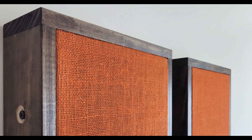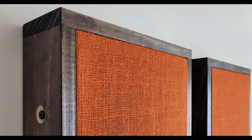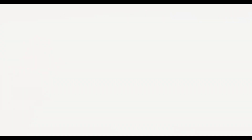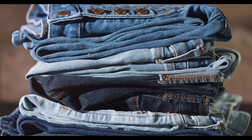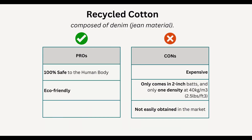Recycled cotton is made from denim — that is, jean material. It is 100% safe and eco-friendly. The only cons are that it is very expensive and not easily obtained, and it only comes in a 2-inch thickness at one density. For materials that only come in 2-inch thicknesses, you can always use two bats if you need a 4-inch thickness.